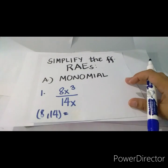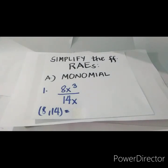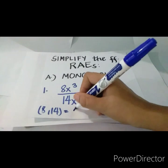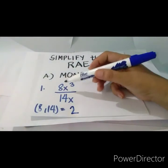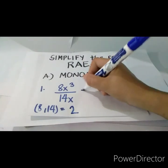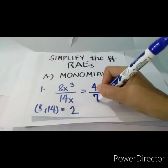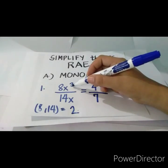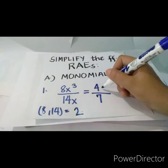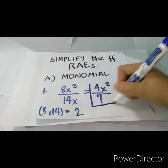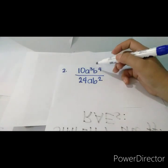We'll simplify the following rational algebraic expressions. The first one is a given monomial: 8x cubed over 14x. The first thing we should do is identify the GCF of the numbers. We have 8 and 14, so the GCF is 2. Divide 8 and 14 by the GCF: 8 divided by 2 is 4, and 14 divided by 2 is 7. For the variables, subtract the exponents: 3 minus 1 equals 2, so we have x squared. The final answer is 4x squared over 7.